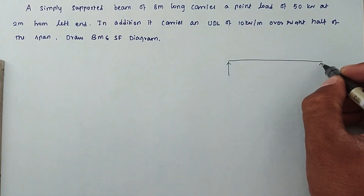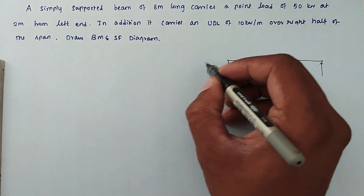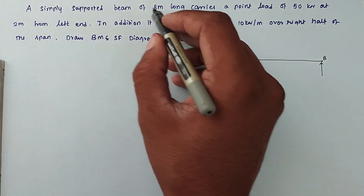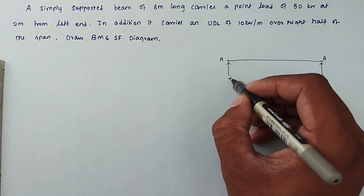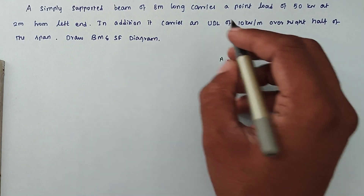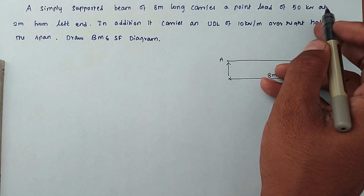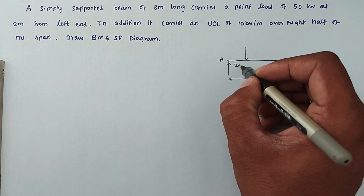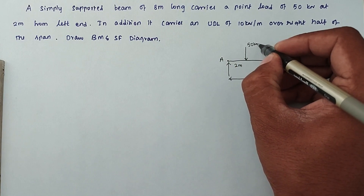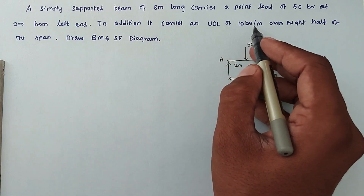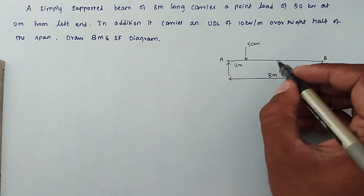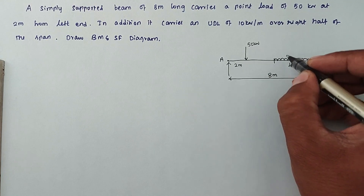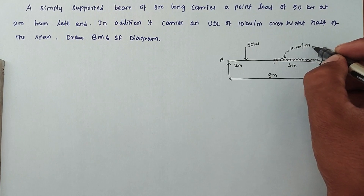So first we have to draw the beam — a simply supported beam with supports at both ends, A and B. The span is 8 meters. From the left end, at 2 meters, it carries a point load of 50 kN. In addition, over the right half (the last 4 meters), it carries a UDL of 10 kN per meter.